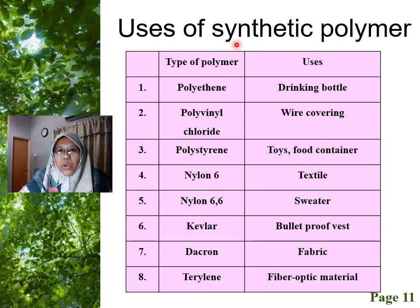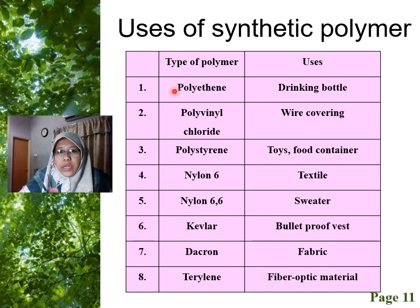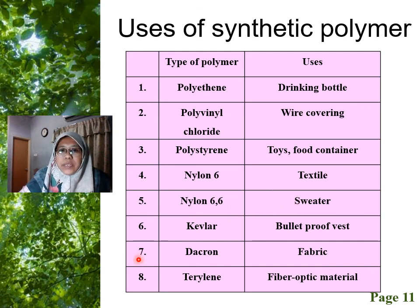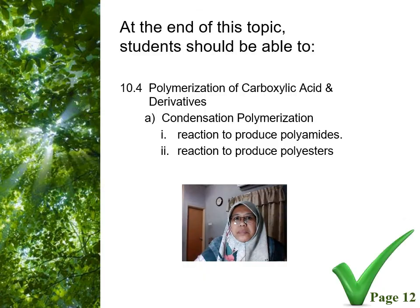Here are the uses of synthetic polymers — most of these are things we use in our daily life: PVC for wire covering, polystyrene is everywhere, nylon 6,6 is used for textiles and sweaters, and then there is Kevlar, Dacron, and Perlon. Thank you very much for listening. I'll see you again in the next chapter.